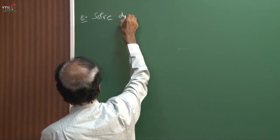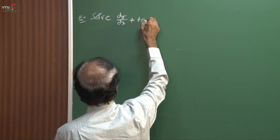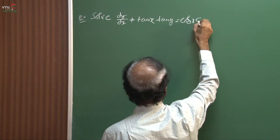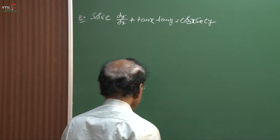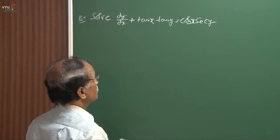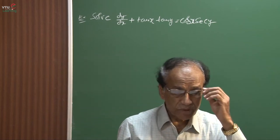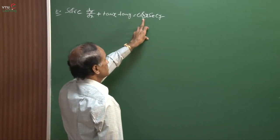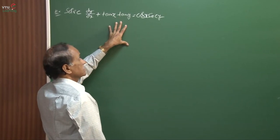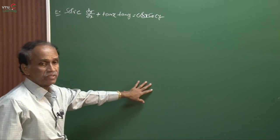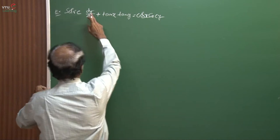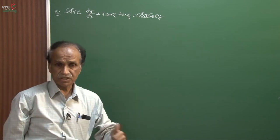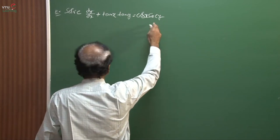Solve dy/dx + tan(x)·tan(y) = cos(x)·sec(y). In this problem you do not have x and y separately in the second term on the LHS and the RHS term. But because of the presence of sec(y), this is a form where you can declare it as Bernoulli's differential equation — sec(y) is the extra term that is to be removed.